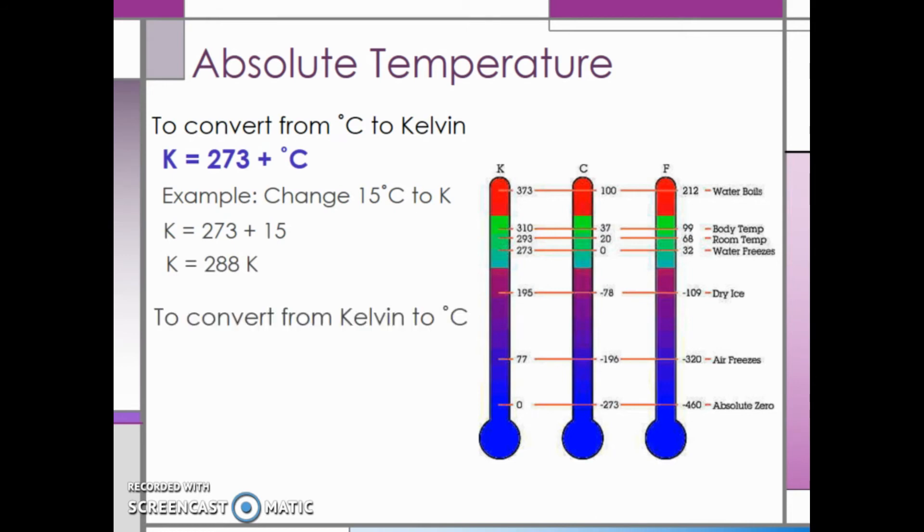If we want to convert from Kelvin to degrees Celsius, we will take the temperature in Kelvin and subtract 273. As an example, if we want to convert 250 Kelvin to degrees Celsius, we will take 250 and subtract 273. This gives us a negative number, so 250 Kelvin is equal to minus 23 degrees Celsius.